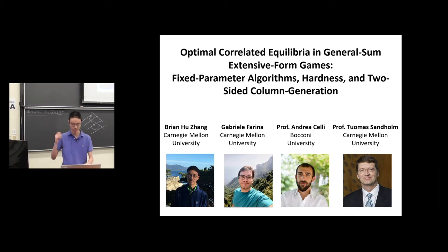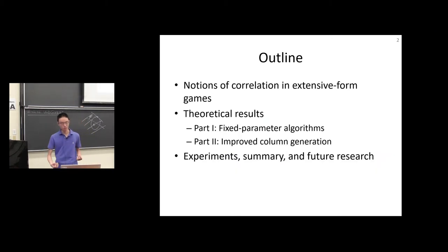So let's break down this mouthful of a title. First I'll introduce what correlation means in extensive form games. Then I'll present two families of results. The first is fixed parameter algorithms, and I'll define what that means. The second is an improved method for column generation that works when the first algorithm is pretty slow. They have disparate strengths and weaknesses, which I'll summarize. Finally, I'll talk about some experiments and future research.